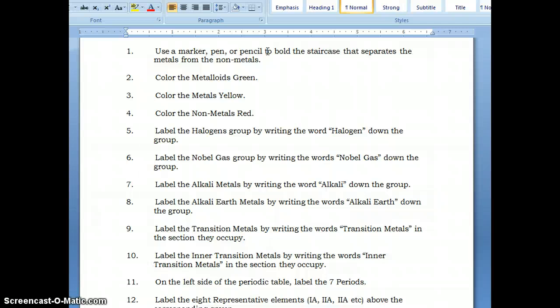Then you are going to label your halogens group by writing the word halogen down the column of that group.